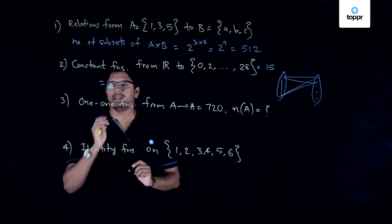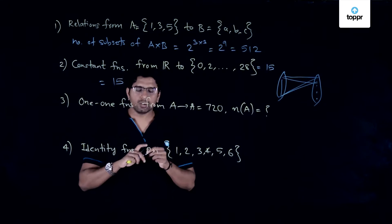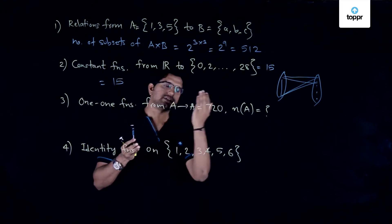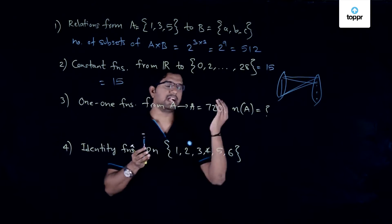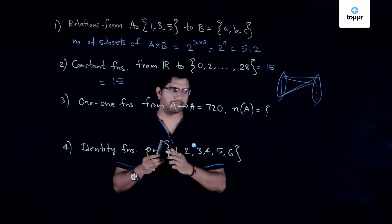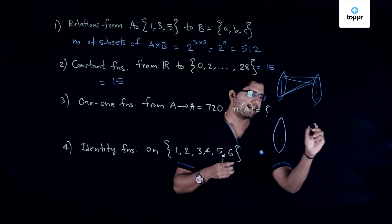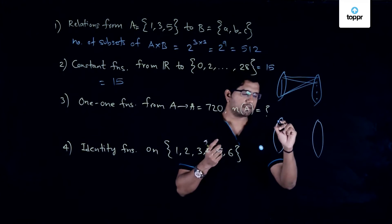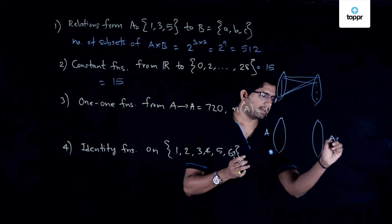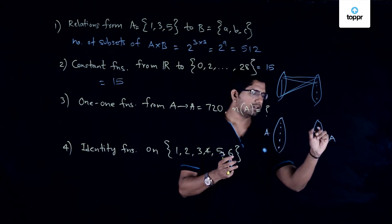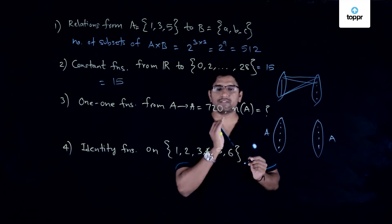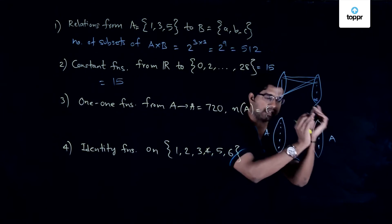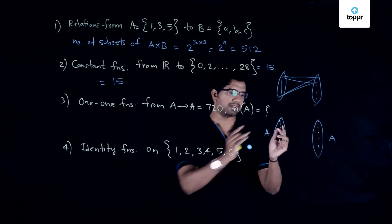The next problem states that the number of one-to-one functions from set A to itself is 720, and we need to find the number of elements in A. Drawing a diagram, both domain and co-domain are the same set A with n elements, and we want one-to-one functions, meaning every element in the co-domain is the image of exactly one element from the domain.